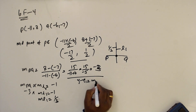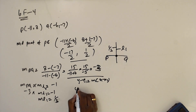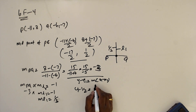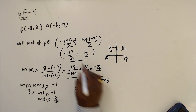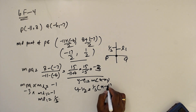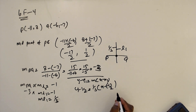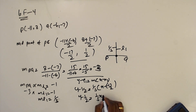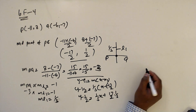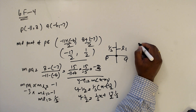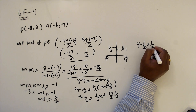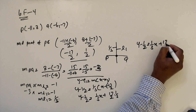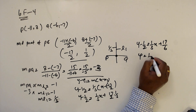The equation: y minus y1 equals m times x minus x1. So y minus one half equals 1 over 3 times x minus minus 17 over 2. Expanding: y minus one half equals 1 over 3 times x plus 17 over 6. Therefore y equals 1 over 3 x plus 17 over 6 plus one half.